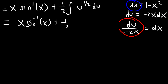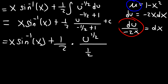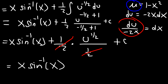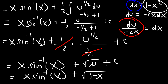Applying the power rule, we get u to the power of negative one half plus one, divided by negative one half plus one, plus C. Negative one half plus one equals one half, so we have u to the one half divided by one half — and one half divided by one half is one. We can rewrite u to the one half as the square root of u, and then replace u with 1 minus x squared. So the final answer is x arc sine of x plus the square root of 1 minus x squared, plus C.